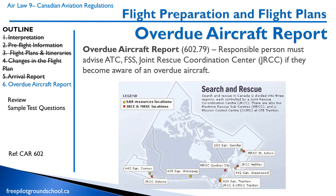Let's briefly talk about overdue aircraft. This is when the responsible person has to advise somebody that the aircraft has not arrived. They can call flight service, ATC, the Joint Rescue Coordination Center, or even the police — they usually have those numbers anyway. If you make somebody a responsible person, make sure they know who to call when you go missing. In Canada, we have search and rescue facilities located at military bases in Victoria, Comox, Winnipeg, Quebec City, Trenton, Greenwood, Halifax, St. John's, and Gander.